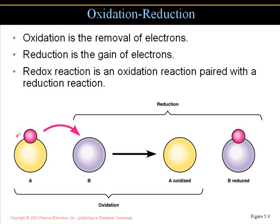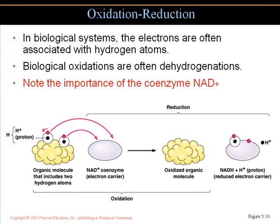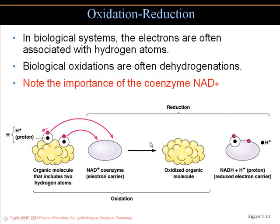In the biological system, electrons are often associated with hydrogen atoms, and biological oxidations are often referred to as dehydrogenation. NAD serves as a coenzyme in a redox reaction — an organic molecule with two hydrogen atoms, NAD combines with an oxidized organic molecule, leading to reduction and the release of a hydrogen ion, also referred to as a proton because it's positively charged. Highly reduced compounds such as glucose, with many hydrogen atoms, contain potential energy that is used in the Krebs cycle.